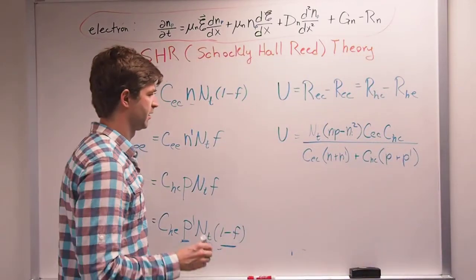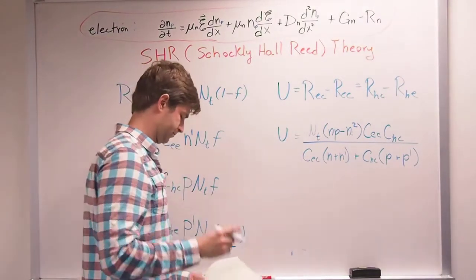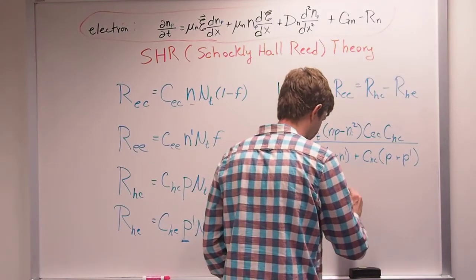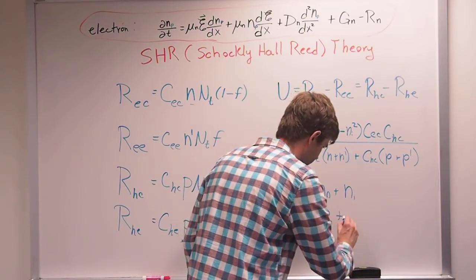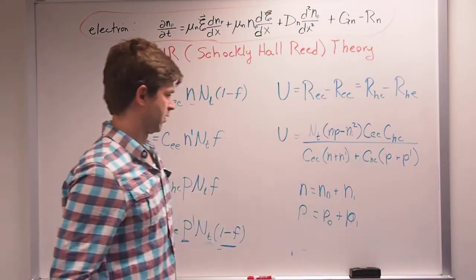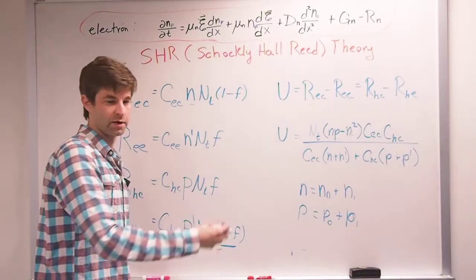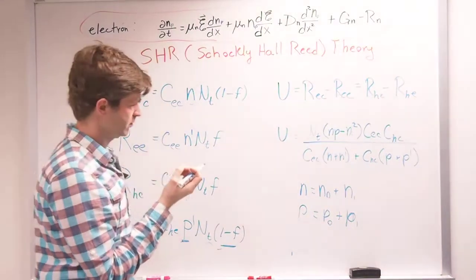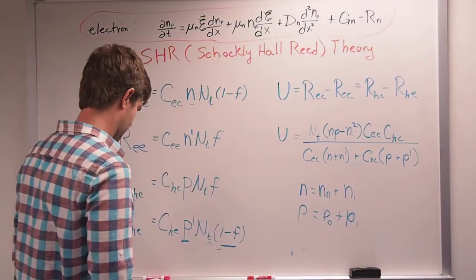N and P can be thought of as: N equals N₀ plus ΔN₁, and P equals P₀ plus ΔP₁, where ΔN₁ and ΔP₁ are the generated electrons and holes that occur in the lattice. N₀ and P₀ could be your doping if you assume 100% ionization. N′ is what's occupied in the trap state.